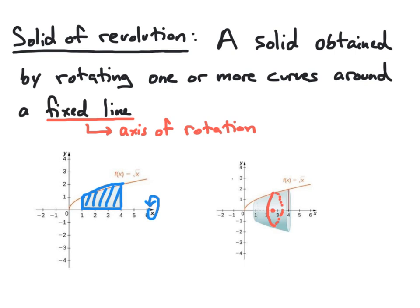We need to find the area of this disk. In order to find the area of a disk, we need to know the radius, because the area will be pi times the radius squared. We can determine the radius of the disk by going back to our region and looking at how that particular cross-sectional disk was formed. In this case, we pick the same x value and notice that this disk is formed by taking the segment from the x-axis up to the curve square root of x.